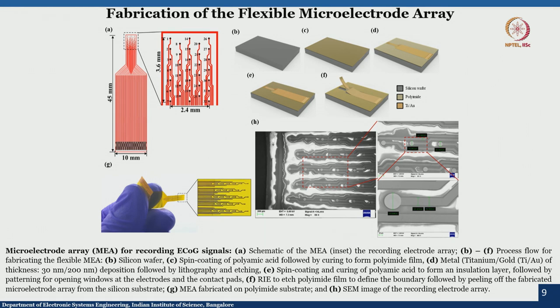To improve the resolution, we started fabricating a 32-channel high-density microelectrode array. For the rat's brain, 32 channels is considered a high density. The material used as substrate is polyimide, coated on a silicon wafer, but the final device is made out of the polyimide substrate. On the polyimide substrate, we have titanium and gold patterned, then polyimide is spun again as an insulating material, and photolithography is performed to expose the recording electrodes and contact electrodes.